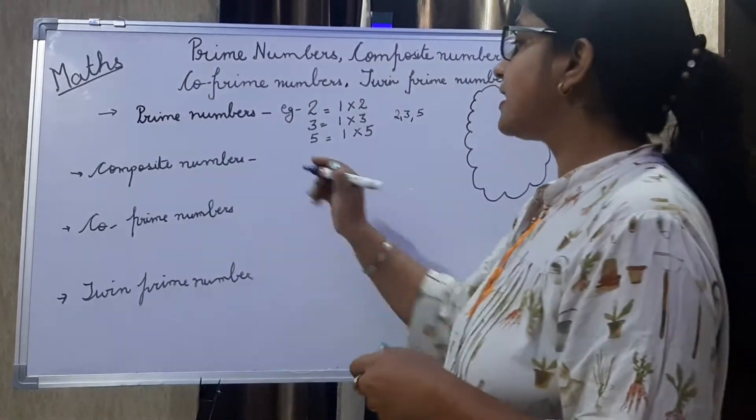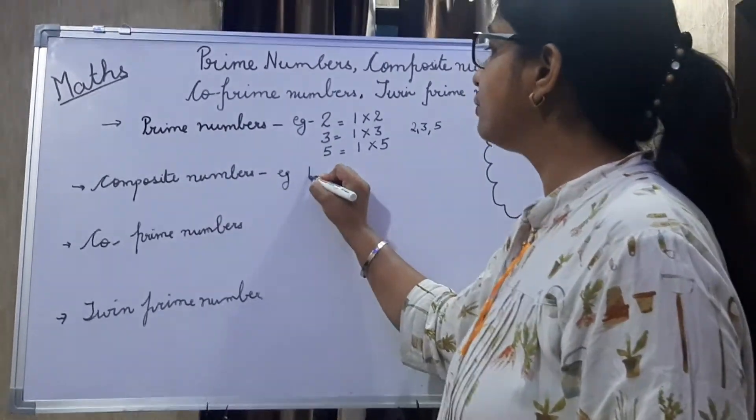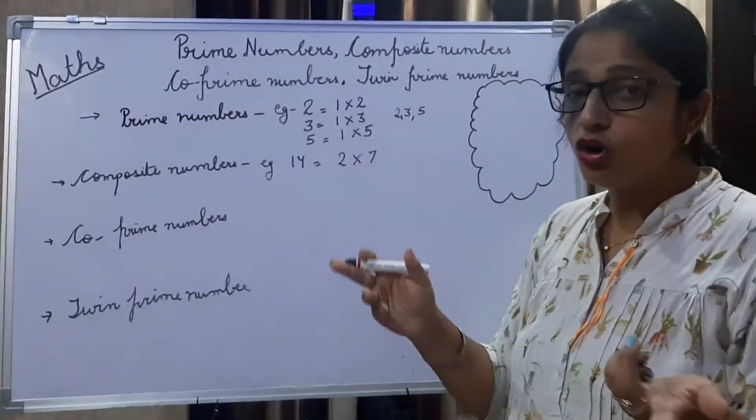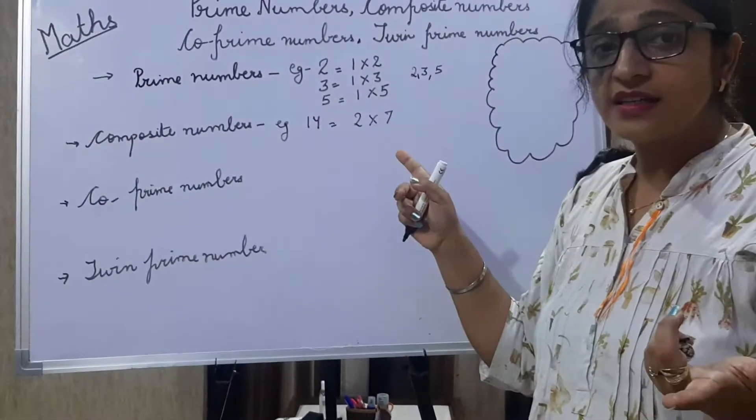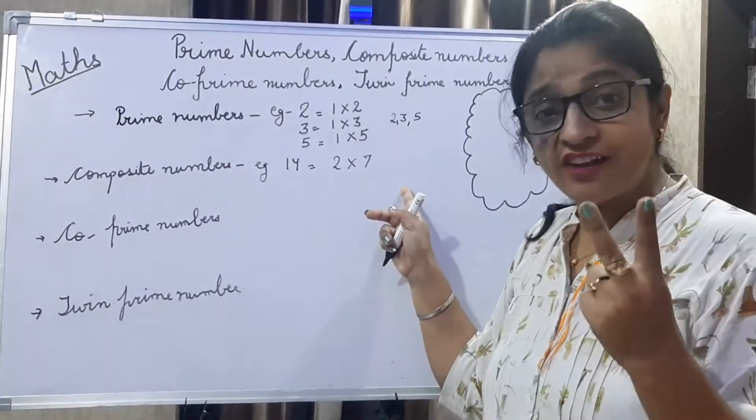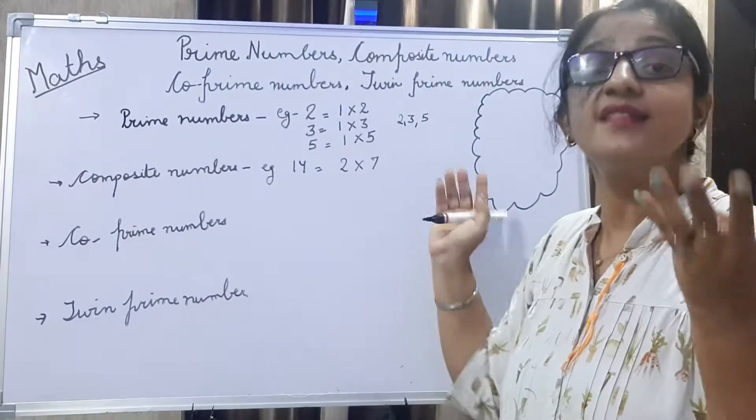And other factor means, like for example, let me explain with 14. Two and seven. Now in this, you can tell, one is a factor, seven and fourteen are factors. One is there, the number itself is there, and two more factors are there: two and seven.